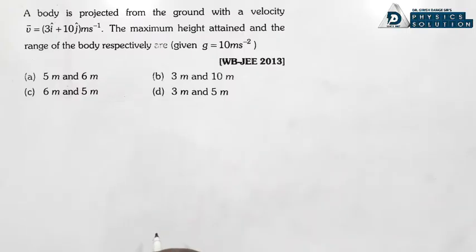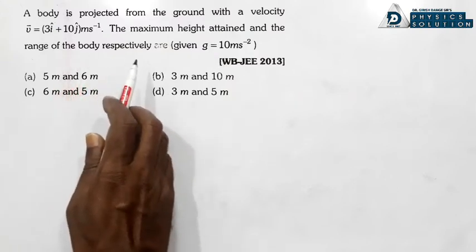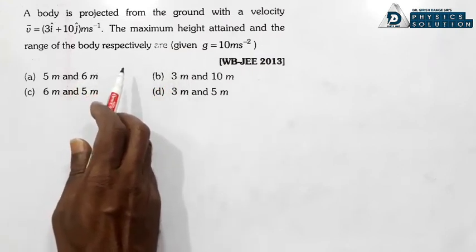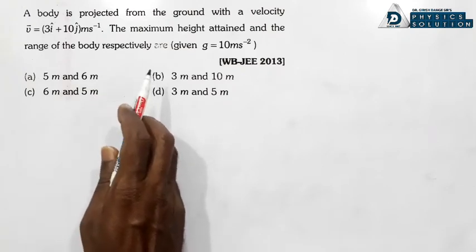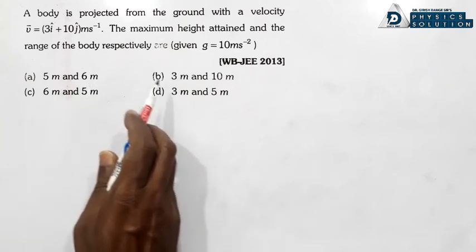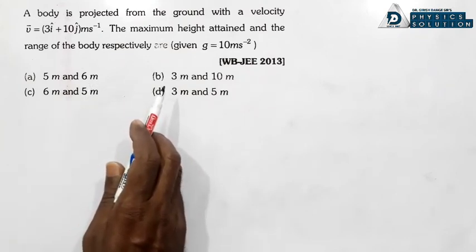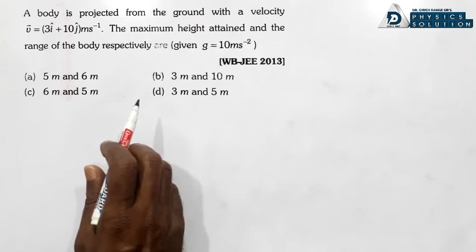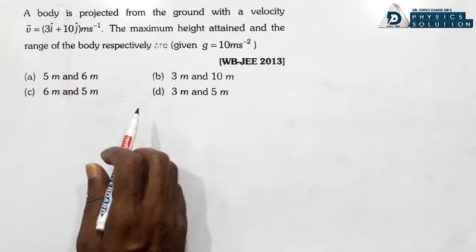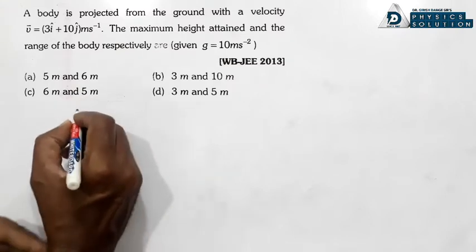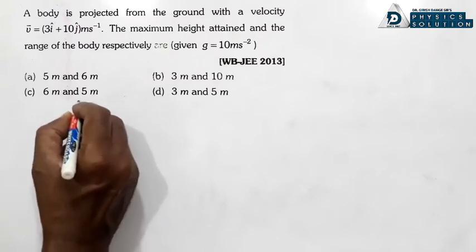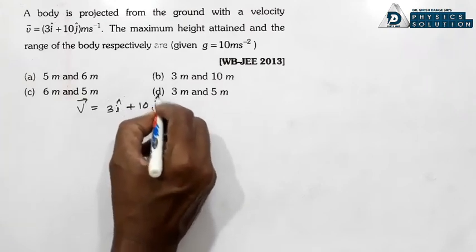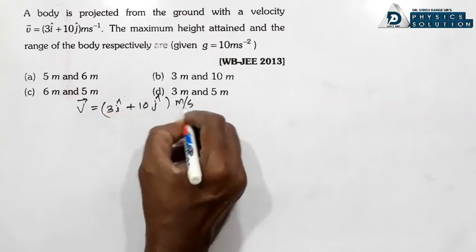Next problem: A body is projected from the ground with velocity v = 3î + 10ĵ m/s. Find the maximum height attained and the range of the body. g = 10 m/s². Velocity vector form mein diya hai.